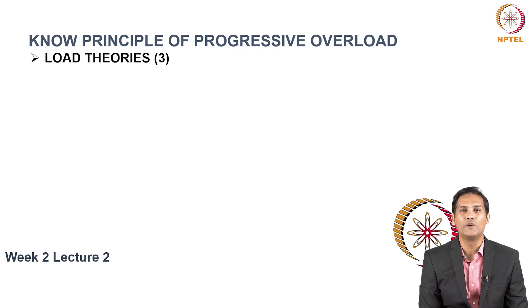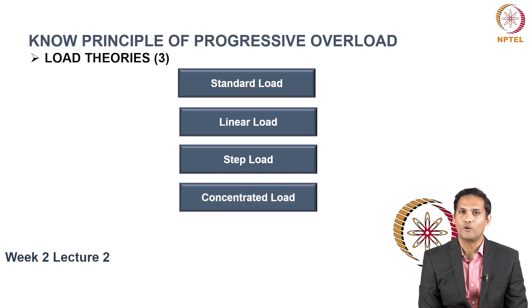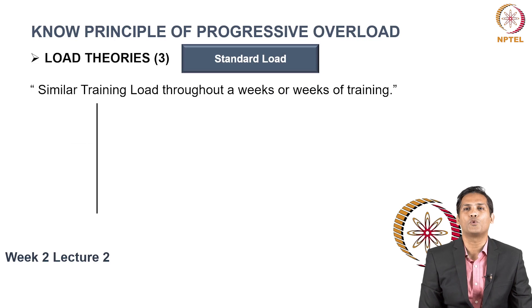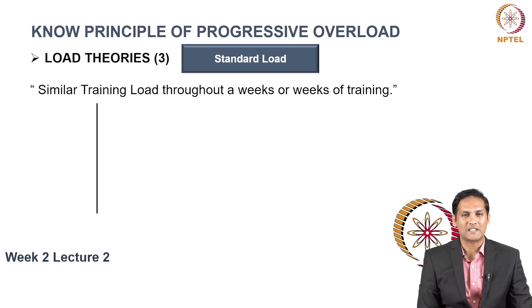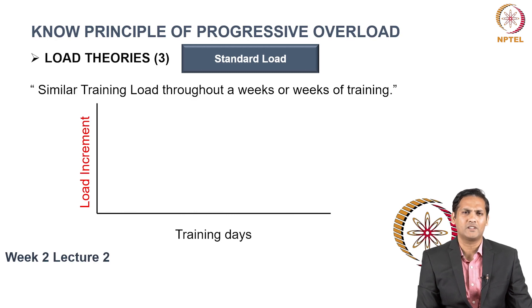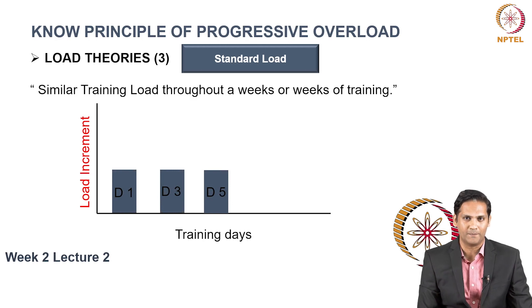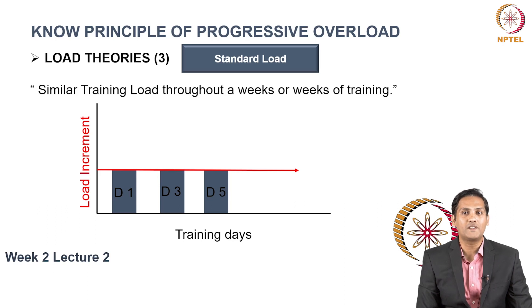Now let's understand how progressive overload can be implemented with the help of different loading theories: standard load, linear load, step load, and concentrated load. A standard load is a similar training load — that is, a similar frequency, intensity, or volume — throughout a week's session or over multiple weeks. On a graph where the x-axis represents training days and the y-axis represents load increment, using similar frequency, intensity, and volume the graph looks like a flat straight line.